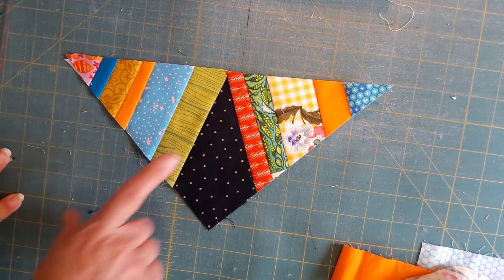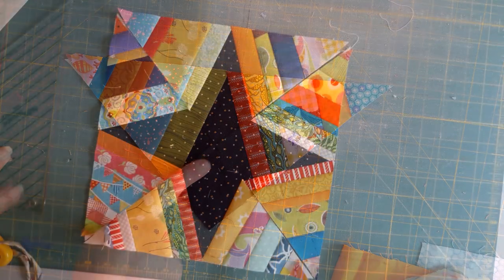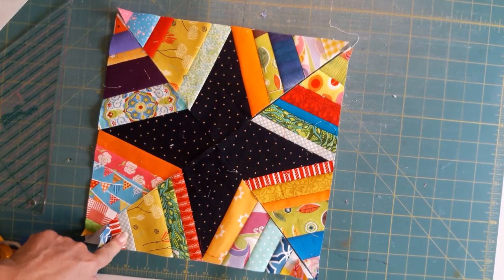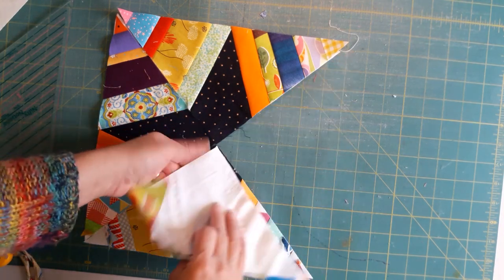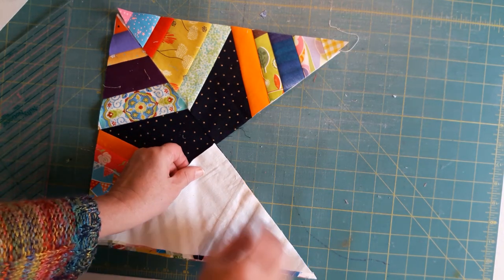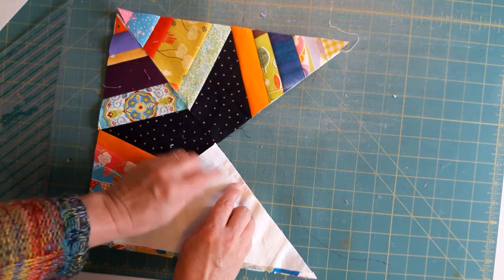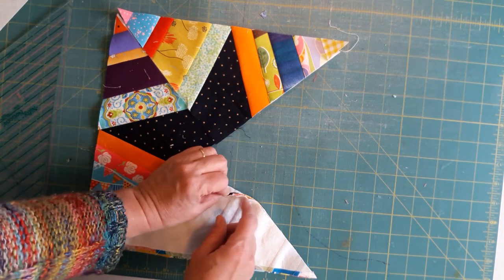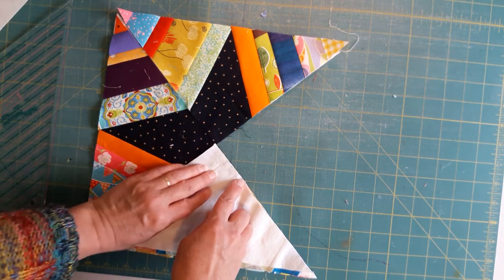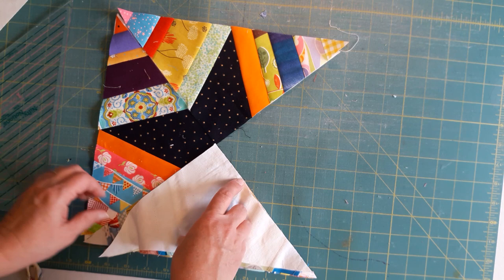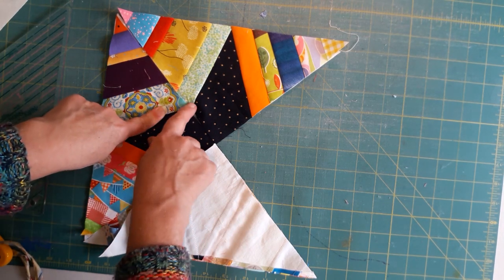And for each block you're going to need four of these. Then you'll lay your block out like this, put these sides together. You can pin here a quarter inch in and make sure that it lines up on the side where your star is, if you're really worried about your points coming together.